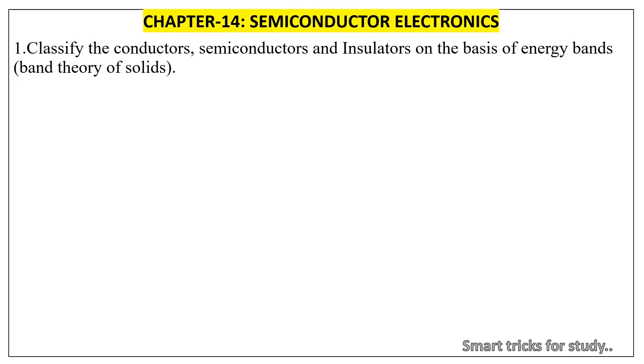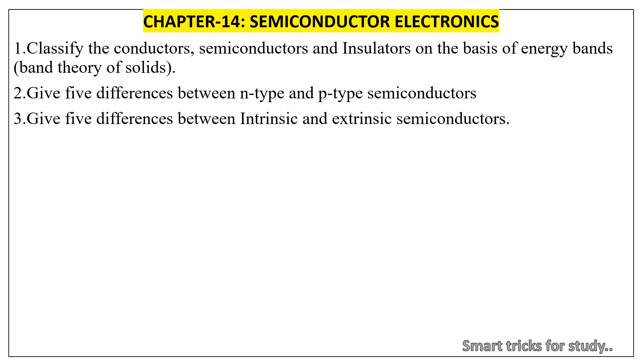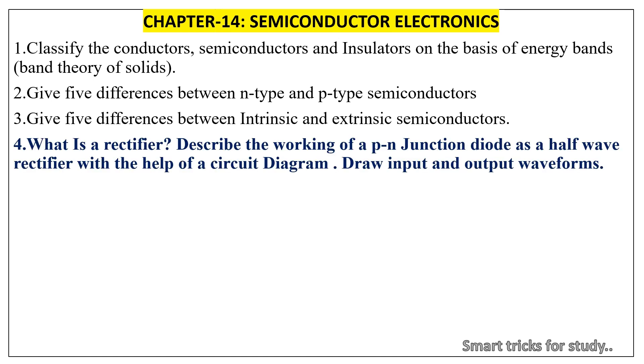Chapter 14, Semiconductor Electronics. 1. Classify the conductors, semiconductors and insulators on the basis of energy bands, band theory of solids. 2. Give five differences between n-type and p-type semiconductors. 3. Give five differences between intrinsic and extrinsic semiconductors.